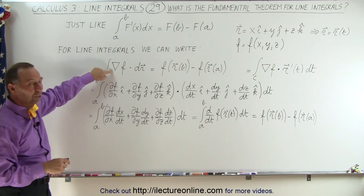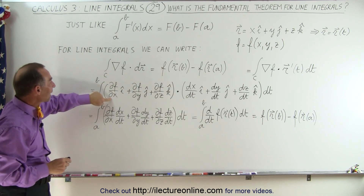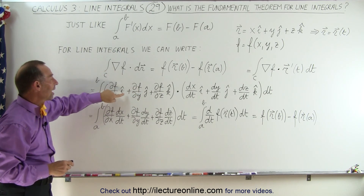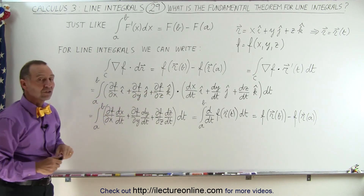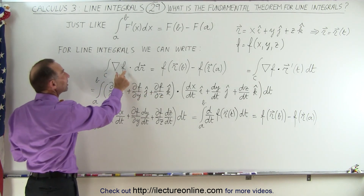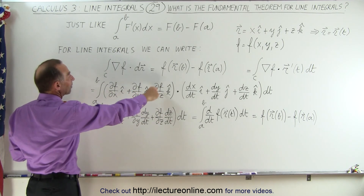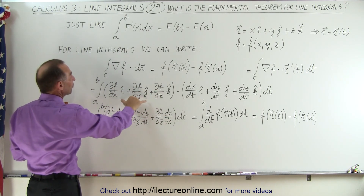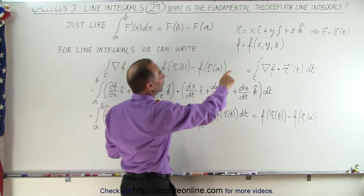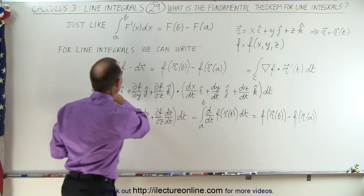Remember what the gradient is: it's the partial with respect to x, y, and z of the function times the unit vectors in the three directions. So the gradient of a scalar function becomes a vector function. The gradient of a scalar function — where the scalar function is a function of x, y, and z — can be written in this form.